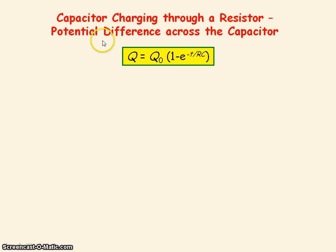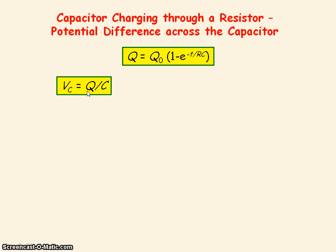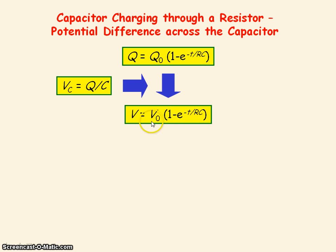The potential difference across a capacitor is directly proportional to the charge stored on the capacitor. So if we take the expression for charge and divide both sides by capacitance C, then we get this voltage expression.